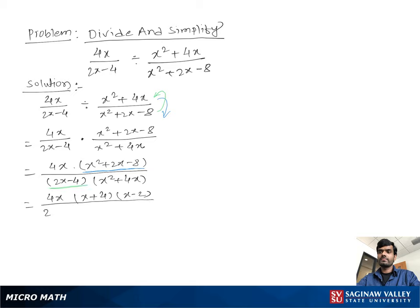Now we take the 2 as a common factor. Now we can write 2 times x minus 2. And now we take the x as a common factor and we can write x times x plus 4.